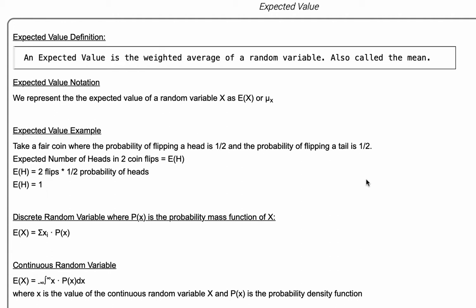If we take two coin flips and multiply that by one half, which is the probability of getting a head on any flip, we get the expected value of heads is one. What this means is, if we toss a fair coin two times, we would expect one head on average. This is a concrete value of expected value.